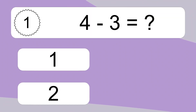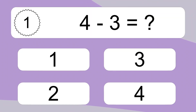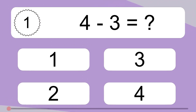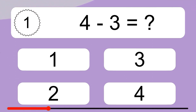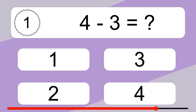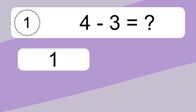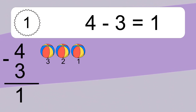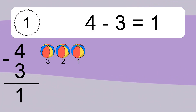4 minus 3 equals what? 4 minus 3 equals 1. Let's count it: 3, 2, 1.